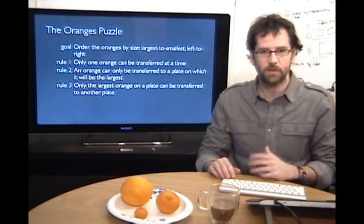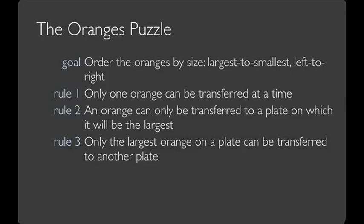The way that the oranges puzzle works is you need to order the oranges by size, largest to smallest, left to right. Only one orange can be transferred at a time. An orange can only be transferred to a plate on which it'll be the largest. And only the largest orange on a plate can be transferred to another plate.